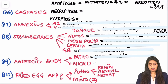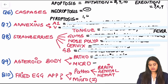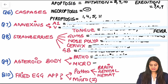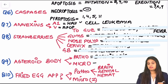Next one-liner on annexins: Annexin A1 is for hairy cell leukemia. Annexin 5 is for apoptosis. Moving on to strawberry appearances: strawberry tongue is seen in Kawasaki disease (vasculitis) and scarlet fever (infection). Strawberry gums — G for G — are seen in Wegener's granulomatosis.